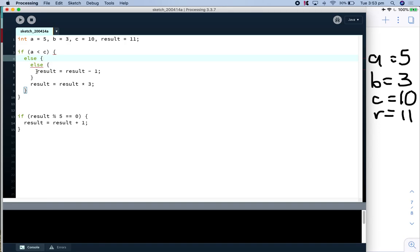So we're going to take our variable here, we're going to minus one. So now we exit this else and we get here result is equal to result times three. So I'm going to update that to 30.